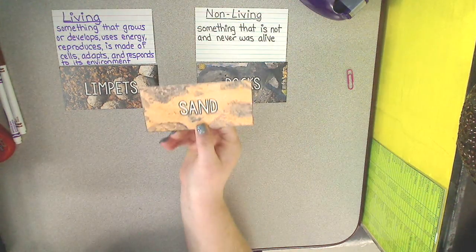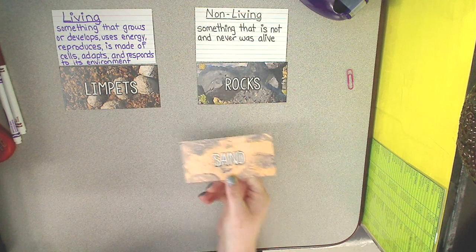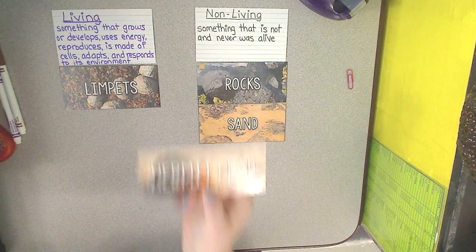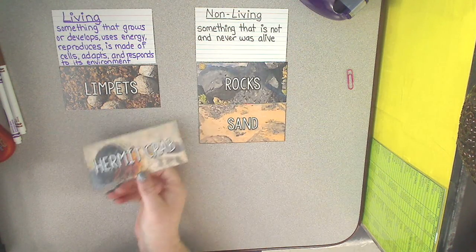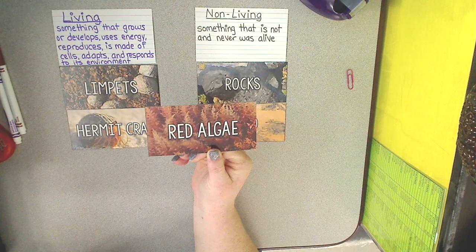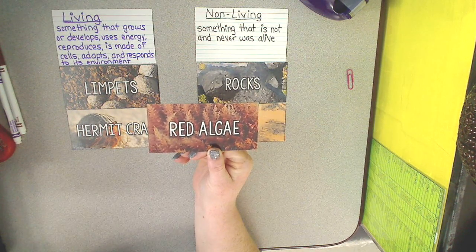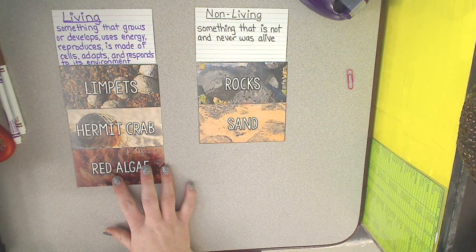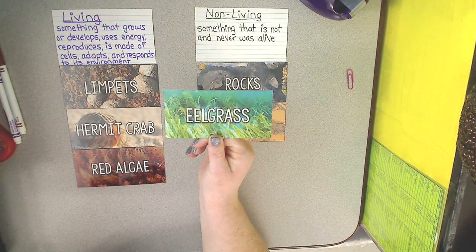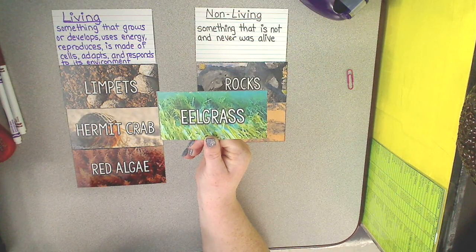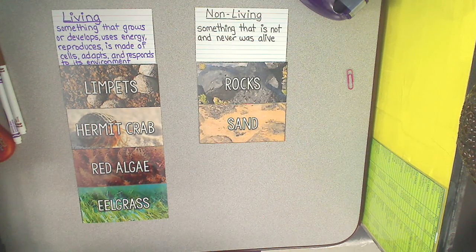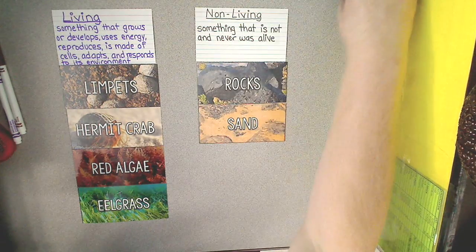What about sand? If you said non-living, you are correct — sand is a non-living item. What about a hermit crab? Hermit crabs are living. What about red algae? Red algae is living — it develops, uses energy, reproduces, and is made of cells, so it is a living organism. What about eel grass? If you said living, you are correct — eel grass is a type of plant that lives in tide pools.